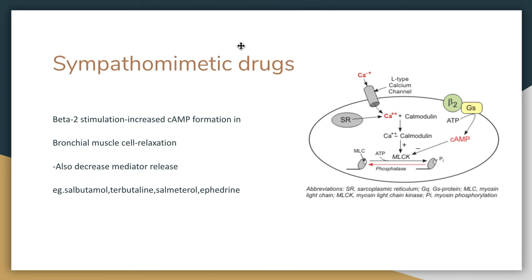Coming to sympathomimetic drugs. Sympathomimetic drugs cause activation of beta-2 receptors on the bronchial smooth muscle, which causes activation of adenylyl cyclase, thereby increasing intracellular cAMP. Increased cAMP formation causes smooth muscle relaxation and also decreases the release of mediators. Examples of these drugs are salbutamol, terbutaline, salmeterol, and ephedrine.